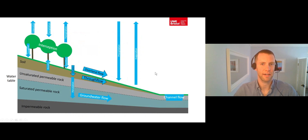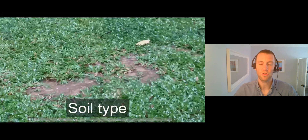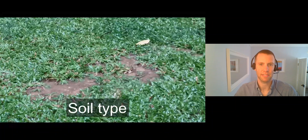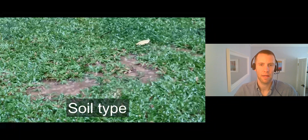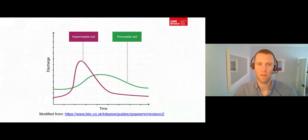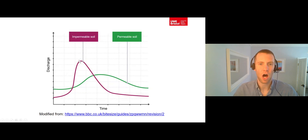Next, let's consider natural factors affecting overland flow, infiltration and through flow. First, soil type. If the soil on the drainage basin hill slopes is impermeable, for example clay soil, then its infiltration capacity is more likely to be exceeded by the rate of precipitation falling during storm events. This will result in more overland flow, so that more storm flow enters the river channel quickly. This means that drainage basins with lower soil permeability, with more impermeable soil, have higher levels of storm flow entering the channel, resulting in a flashier hydrograph.